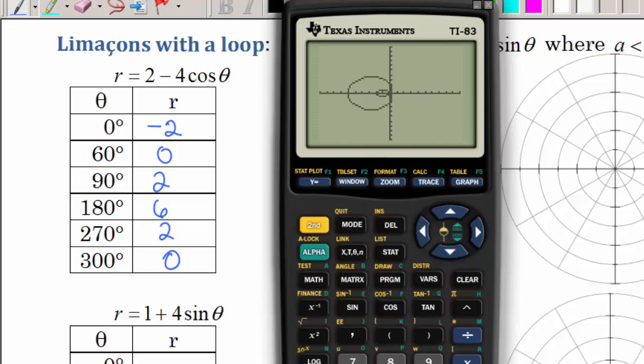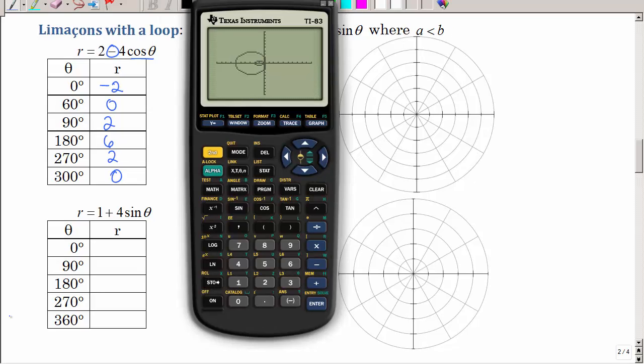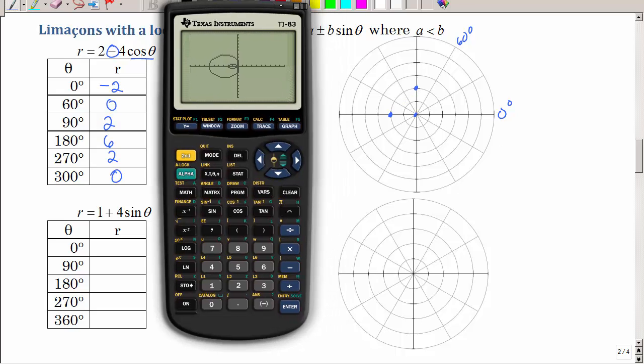And at 300, I get 0 again. So it's supposed to have a loop. So let's go ahead and look at the graph. And you see I can't see much because on my last one I did zoom 0. So let's just go back to zoom 6. All right, and so as expected, it's symmetric with respect to the x-axis. It's on the negative part of the x-axis.